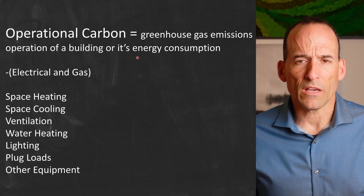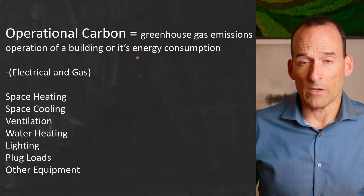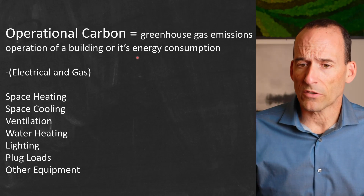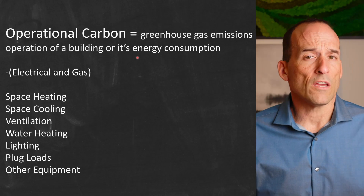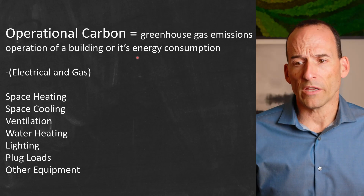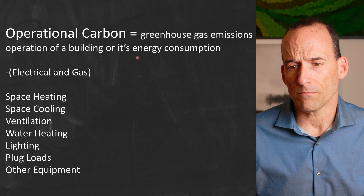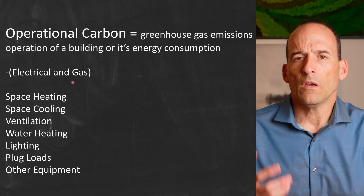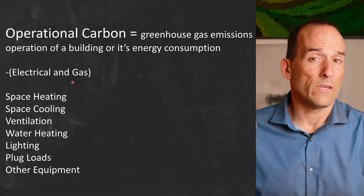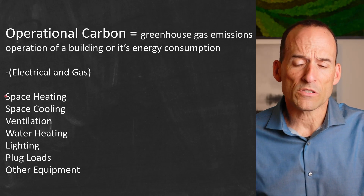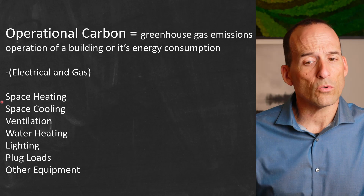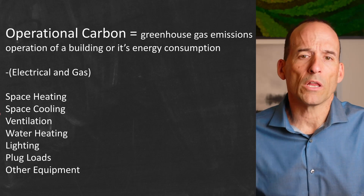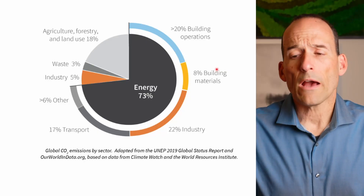What do we think about when we think about operational carbon? Operational carbon is the greenhouse gas emissions — specifically carbon dioxide — associated with the operation of a building or its energy consumption. That includes electrical and gas, and in some parts of the world, fuel oil or even wood. It covers things like space heating, space cooling, ventilation, water heating, lighting, plug loads, and any other equipment in that building.